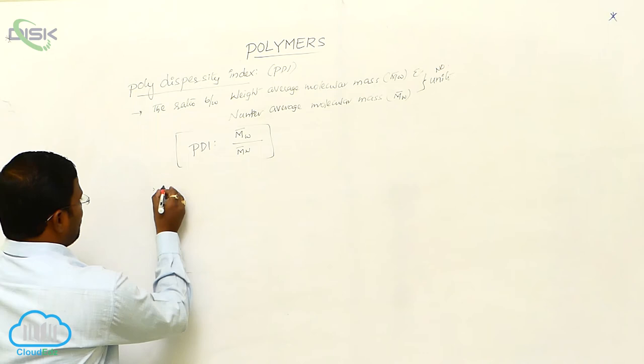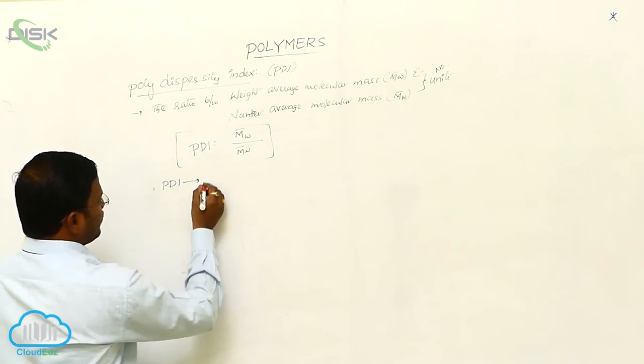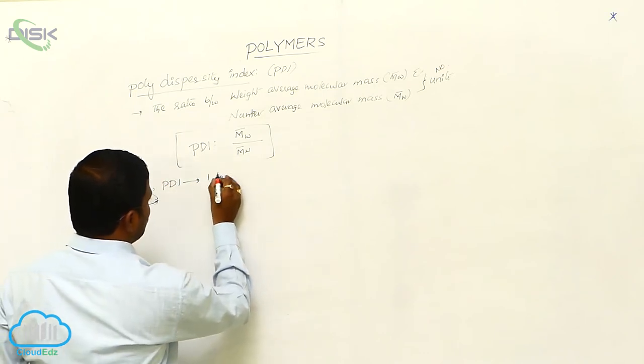Generally, the PDI value for any given polymer must be 1 to 1.5.